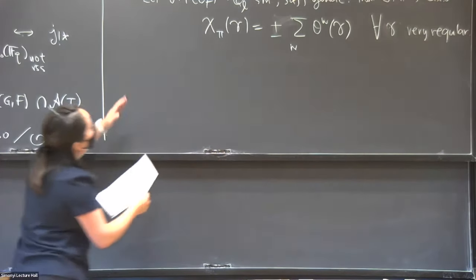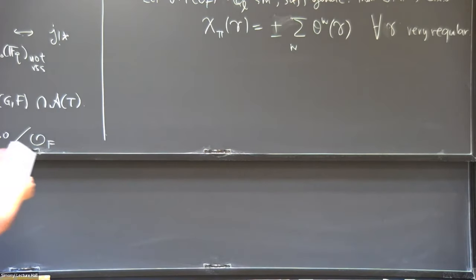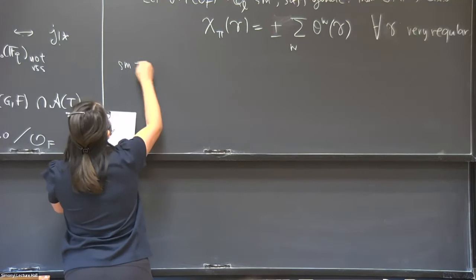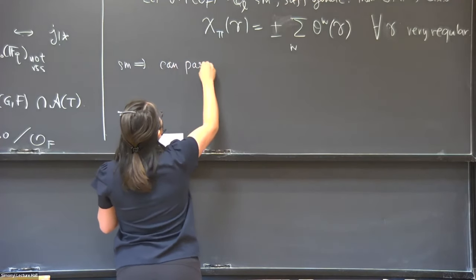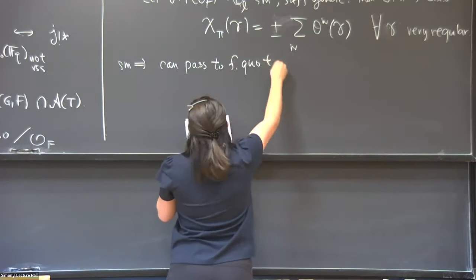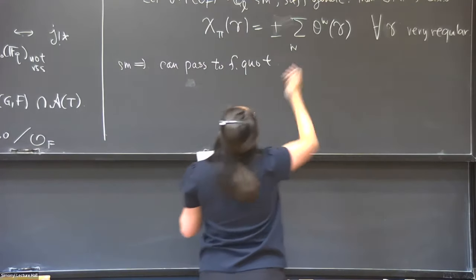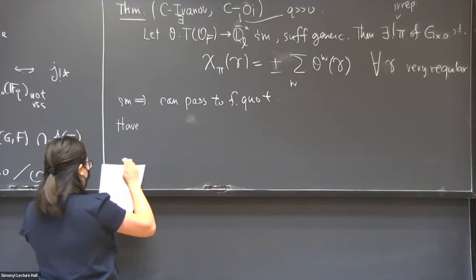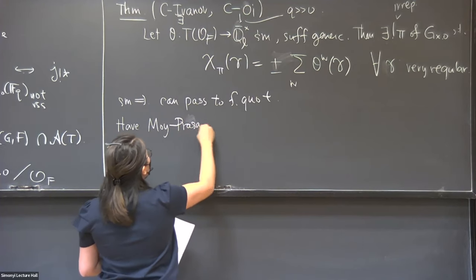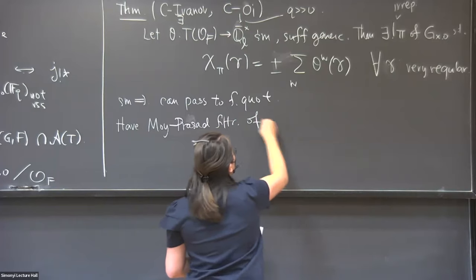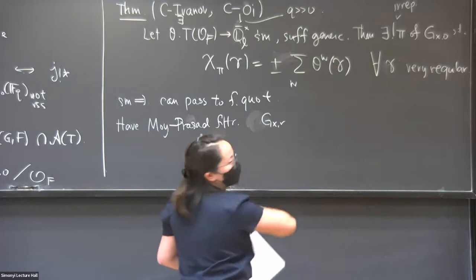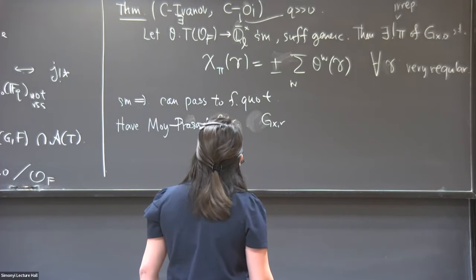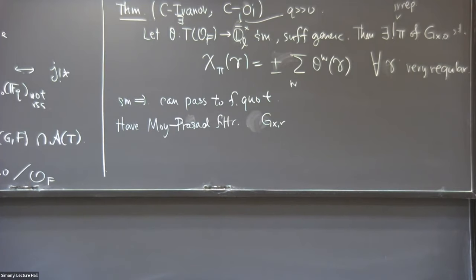So what is the construction? Smoothness implies that we can pass to a finite quotient. We have the Moy-Prasad filtration, which is a filtration of subgroup schemes inside G_{x,0}. We also have G_{x,r+} which is the union of all things strictly bigger than r. In our case, if you take r to be an integer, these two things will always be different.